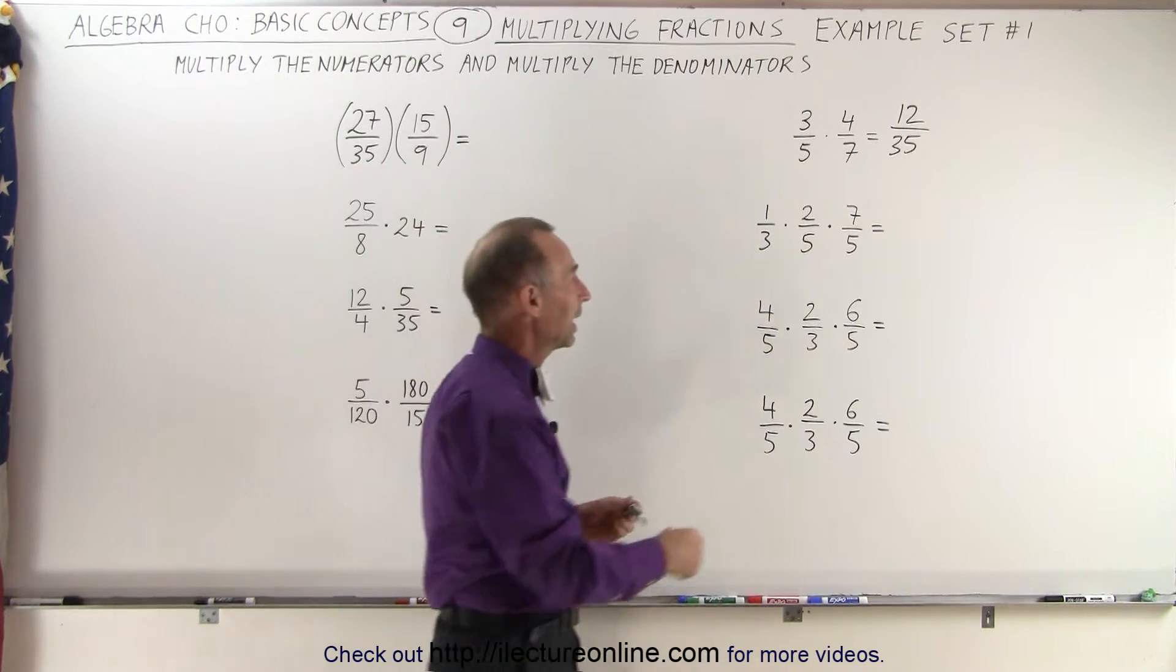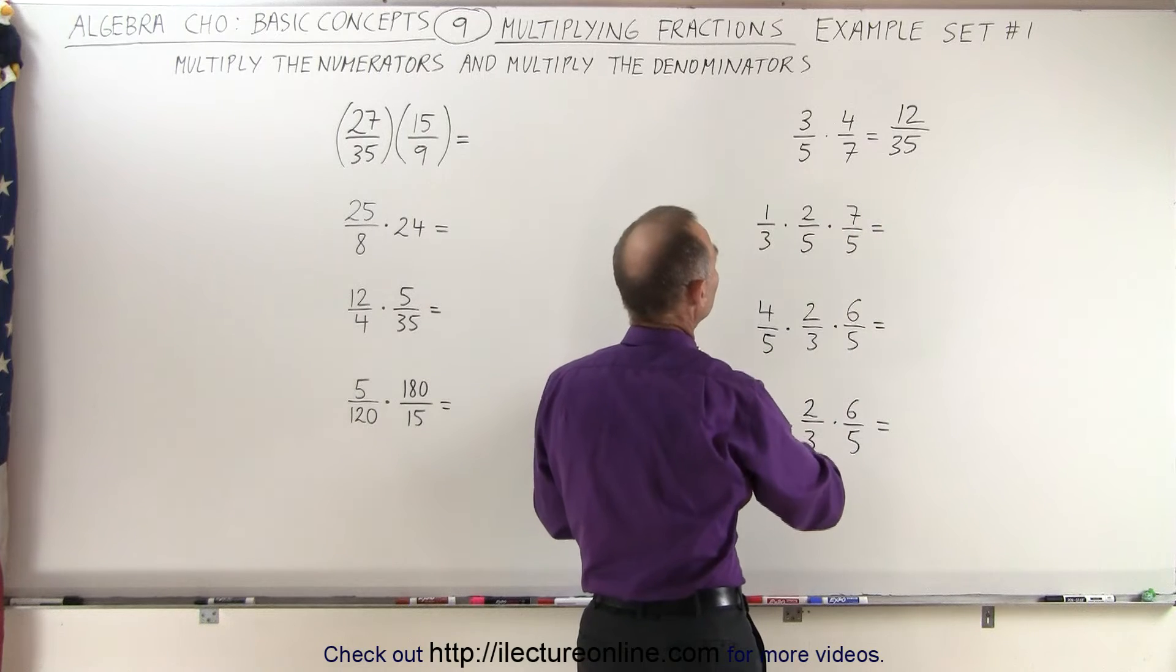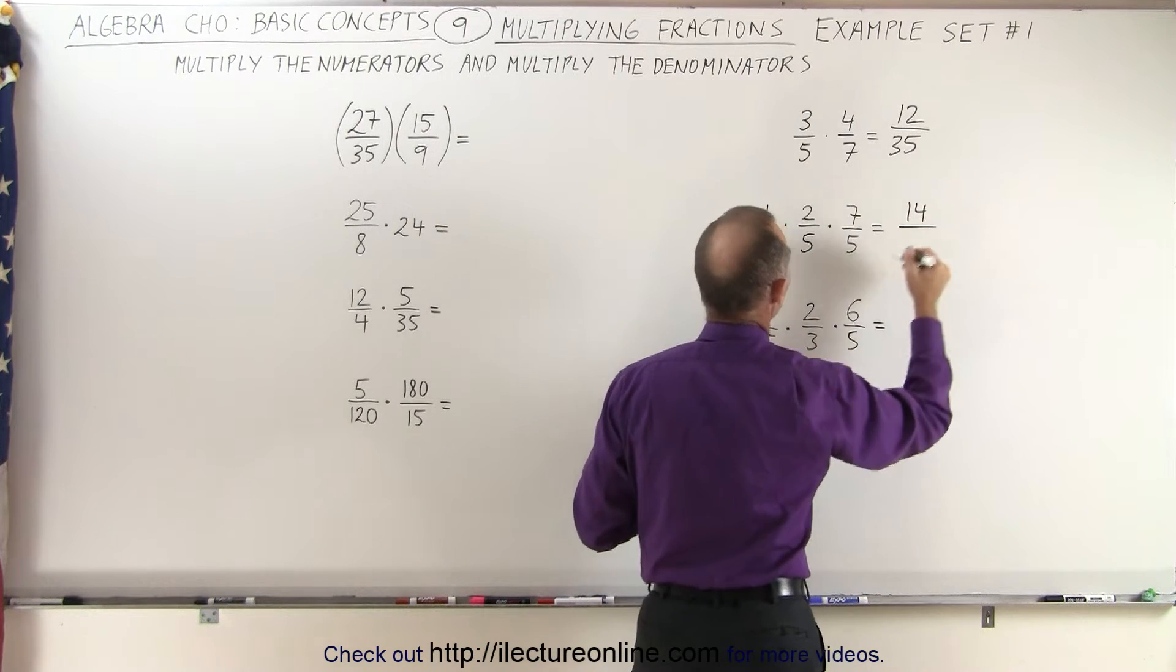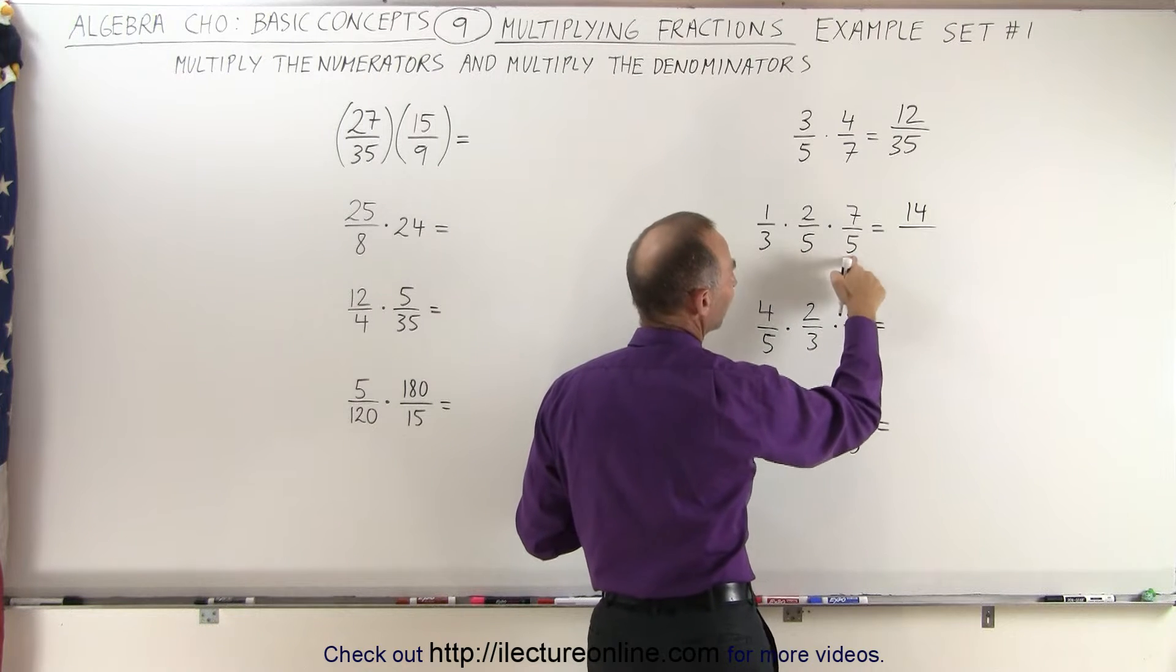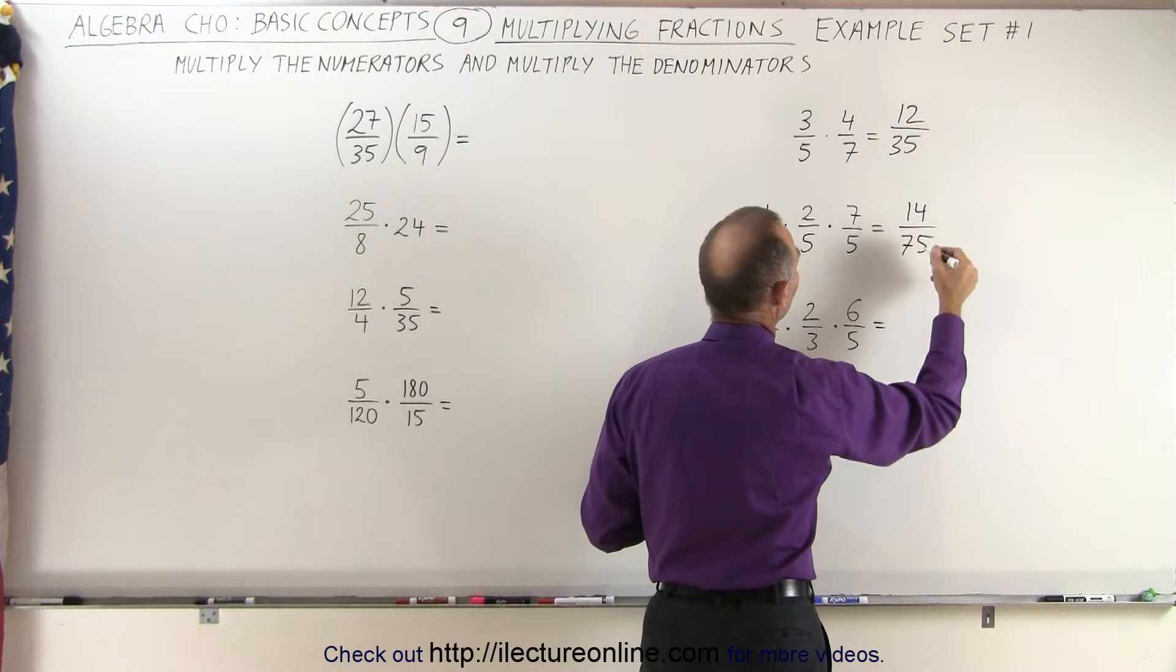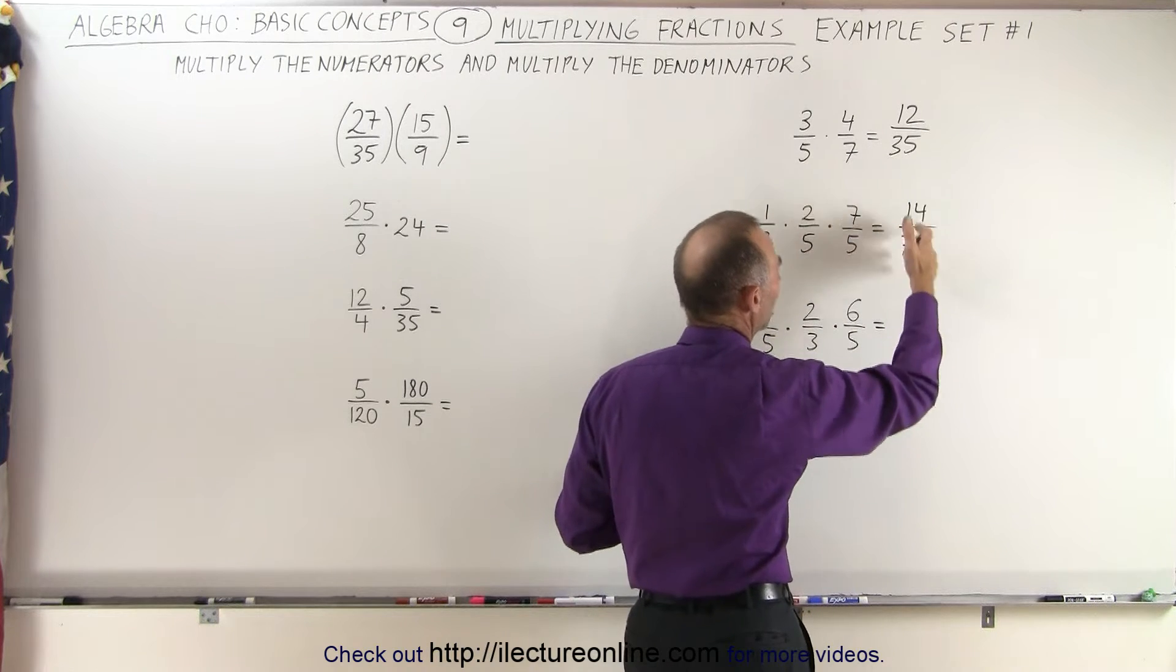Let's try the next one. Again we multiply all the numerators together. So it would be 1 times 2 times 7 which is 14, divided by 3 times 5 times 5. 5 times 5 is 25, times 3 is 75, and it looks like again there's no way that we can reduce that any further.